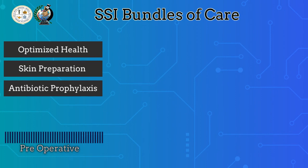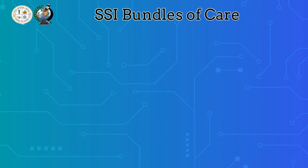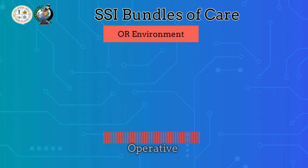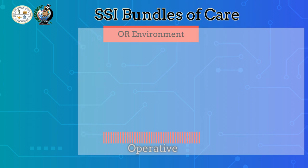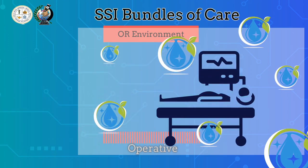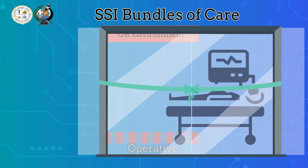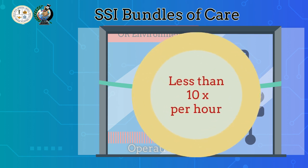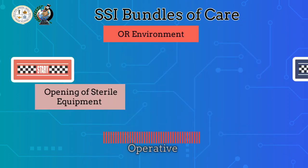Done with our first phase, the pre-operative managements. Moving forward, we are now entering our second phase, which is the operative phase. As part of our care bundle, we have the environment. It is very important that we ensure the sterility of the environment to prevent contamination of our operative site that leads to infection. Ensuring that operating theaters are clean, well sanitized, and sterility is maintained for our patients' welfare. Theaters must also be maintained closed — only less than 10 door openings per hour is recommended, starting from opening of sterile equipment until surgical wound closure.